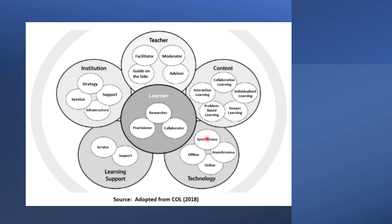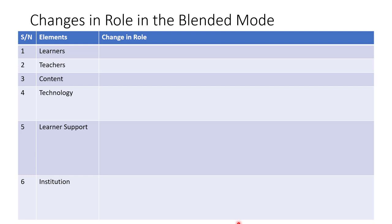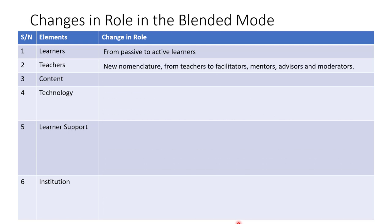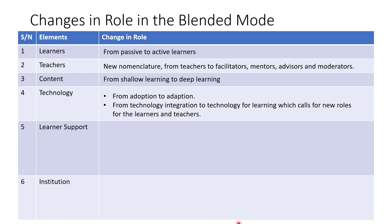Now let us see the roles that have changed. Because with the adaptive framework, when you come in within the blended mode, the role of these elements will change. The learner is now moving from passive to active learners. The teacher's nomenclature shifts from teacher to facilitator, mentor, advisor, and moderator. For the content, it is moving from shallow to deep learning. This particular framework is emphasizing deep learning.